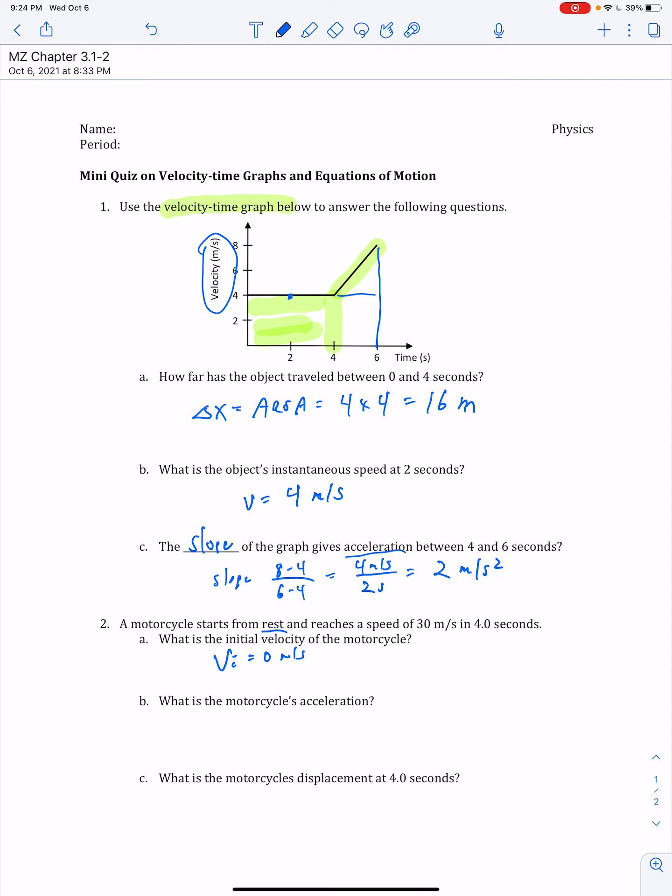Now we're asked what is the motorcycle's acceleration? Here we need to look at all the other information that we're given. 30 meters per second is the final velocity. 4 seconds is the time. So you're being asked to find the acceleration given initial velocity, final velocity, and time. So what equation do we use? Acceleration is going to be the change in velocity over change in time. In this case, 30 meters per second over 4 seconds. Do that calculation, you'll find that it is 7.5 meters per second squared.